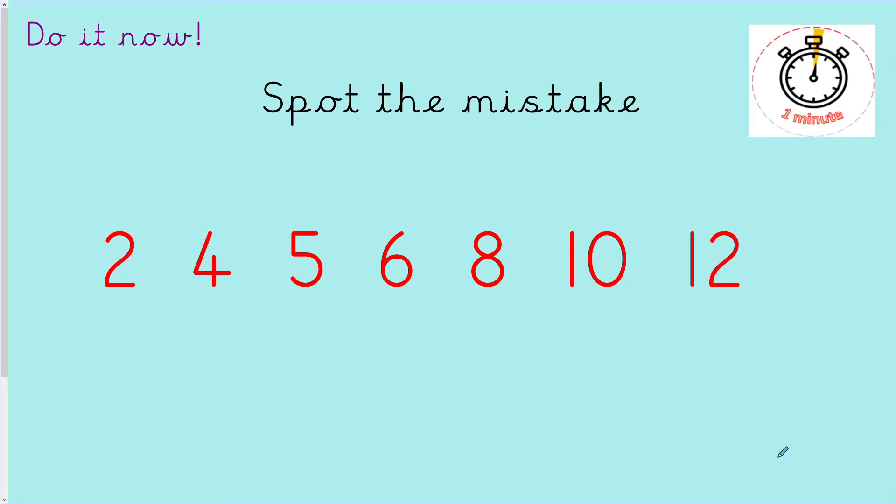Okay, I hope you've all had a chance to do that. Let's have a look at it together. So, let's see what the pattern is. 2, 4, 5, 6, 8, 10, 12. I can see we are going up counting in twos but I know we don't say the number five when we're counting in twos. I'm going to cross that out because I think that is where the mistake is.